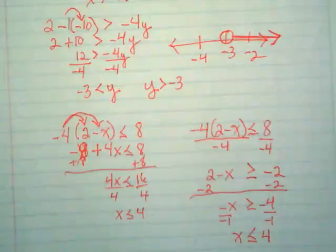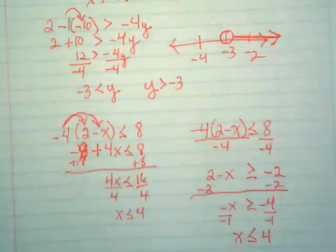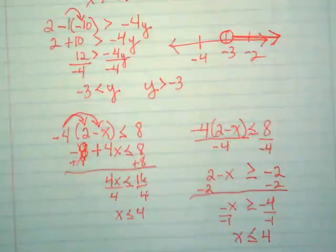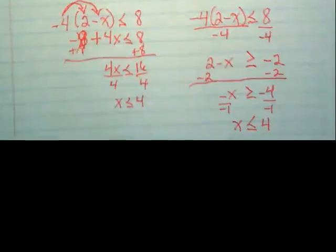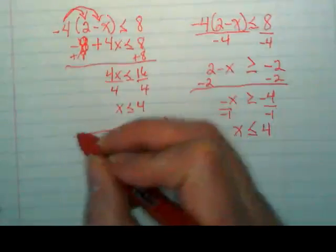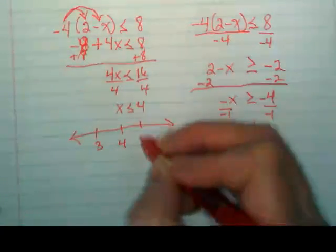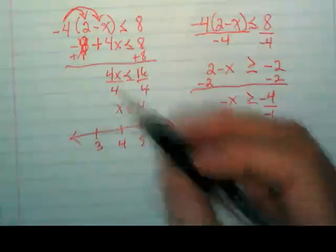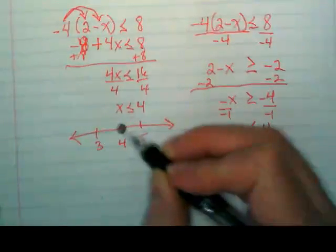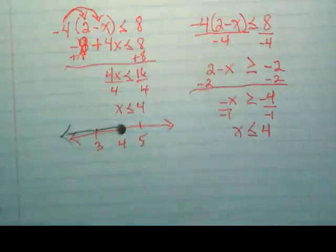This one's more work, but sometimes dividing by the number instead of distributing it can be less work. In this case, it wasn't, but I wanted to show you you can do it both ways. And I'm going to graph it here, just really quickly. 3, 4, 5. It's going to be a filled-in circle, and the line is going to go to the left.